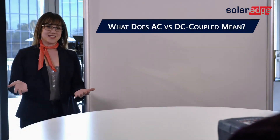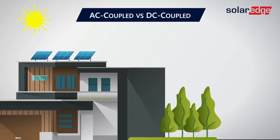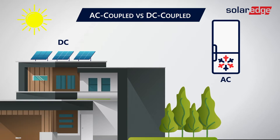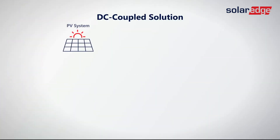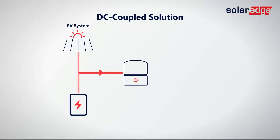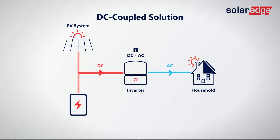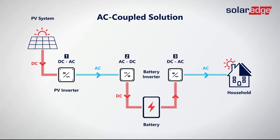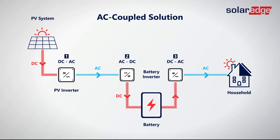So let's start from the beginning. What does AC versus DC coupled even mean? We know that the energy coming from our solar panels is DC, or direct current. But the energy we use to power our appliances requires AC, or alternating current. For that reason, we need to convert that energy for home use. In a DC coupled solution, the solar modules and batteries sit behind the inverter, both on the DC side of the system. But in an AC coupled solution, the modules and batteries work independently from one another, with the solar modules on the DC side and the battery sitting on the AC side of the system.